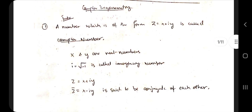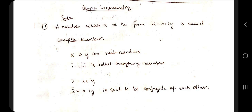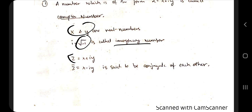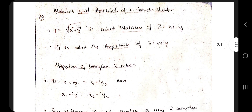Let's get started with complex trigonometry. A complex number is nothing but z = x + iy, where x and y are real numbers and i is the square root of minus 1, which is called the imaginary number. If z = x + iy, the conjugate of z is z-bar, which is x − iy.